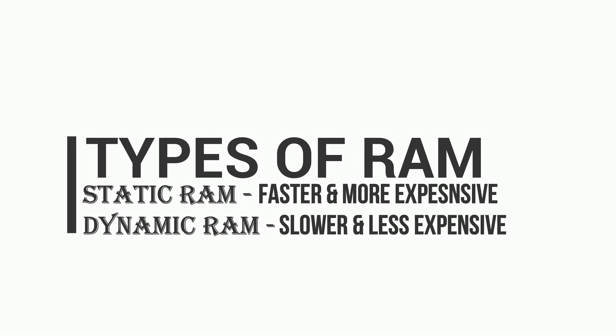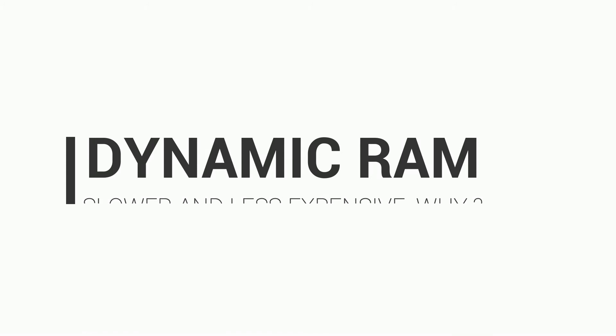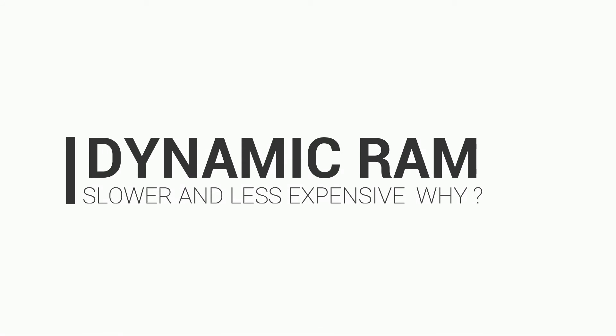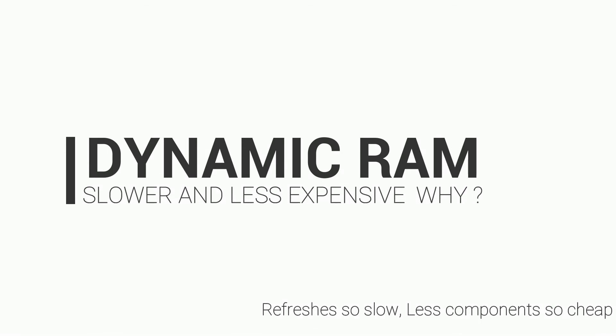Now let's talk about types of RAM. RAM has Static RAM and Dynamic RAM. Static RAM is more expensive but faster than Dynamic RAM. Dynamic RAM is less expensive but slower. In a Dynamic RAM chip, each memory cell is made up of a very small transistor and a capacitor. The capacitor holds the bit information but automatically discharges, so data must be refreshed thousands of times per second, which makes it slow.